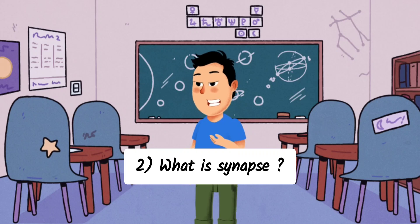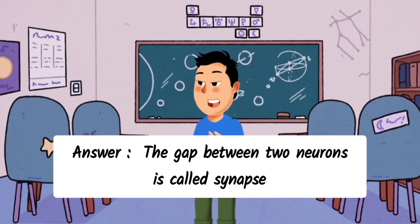Question 2: What is synapse? Answer: The gap between two neurons is called synapse.